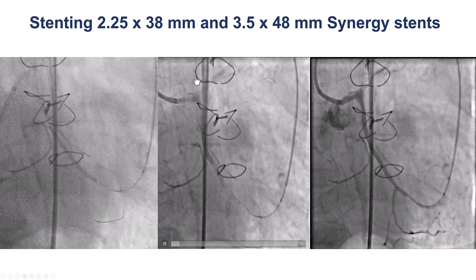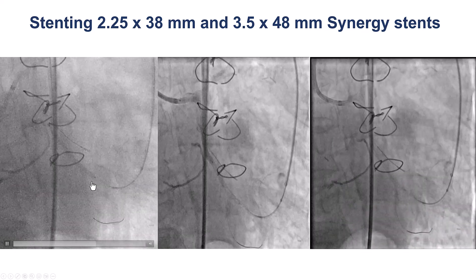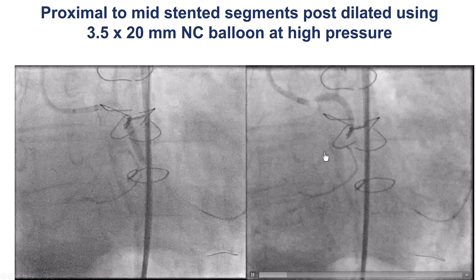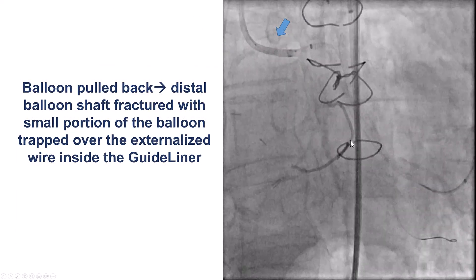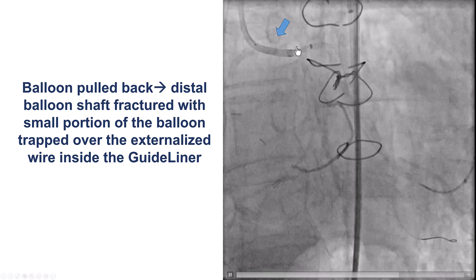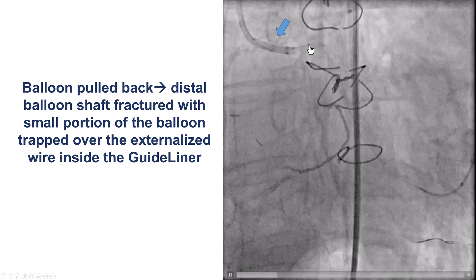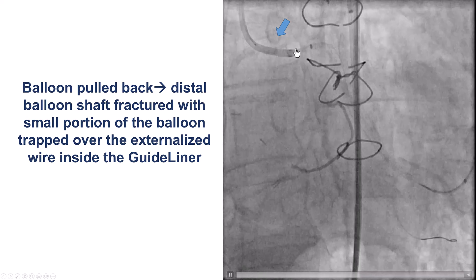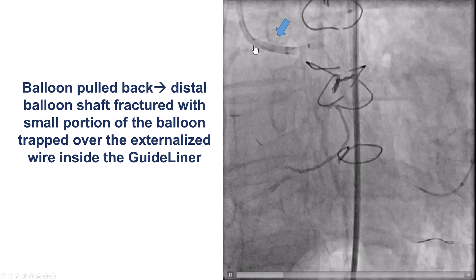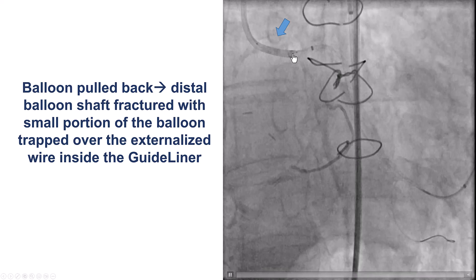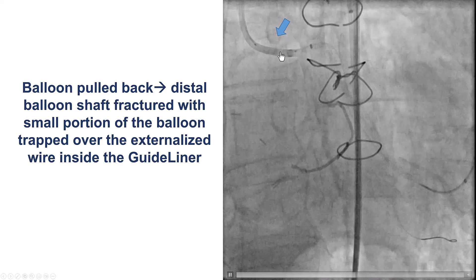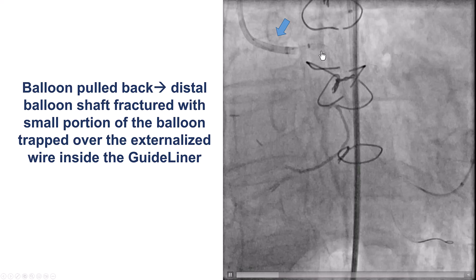We placed drug-eluting stents essentially all the way from the obtuse marginal into the left main, and post-dilated with a 3.5mm non-compliant balloon at high pressure. The problem was that when we tried to pull the balloon back — and perhaps we pulled back a little early — the balloon shaft fractured and a portion of the balloon remained inside the guide catheter. We now had a fractured balloon in the antegrade guide extension over the externalized guide wire. The treatment is typically to advance another balloon, inflate it to trap the fractured balloon, and pull everything out.